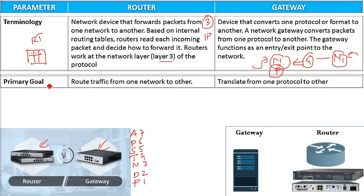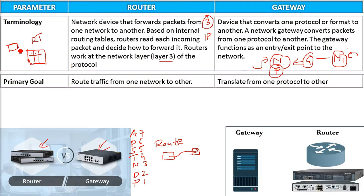Coming to the primary goal: what is the goal of a router and what is the role of the gateway? The primary goal of a router is routing traffic from one network to another. A route is a way, a path. There are various routing algorithms — Dijkstra, Bellman-Ford — using link state and distance vector, and so the router is responsible for deciding which host and which IP address the packet is destined to.